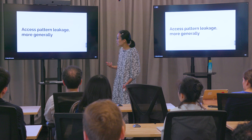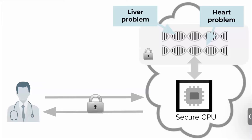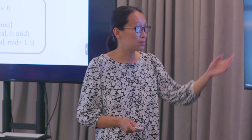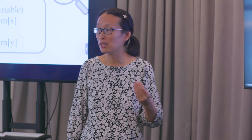Access pattern leakage is actually a more general problem. Here's a medical example: if you're storing genomic data in the cloud — say 23andMe — and a doctor is accessing certain snippets in the genomic data, if you see the doctor is accessing snippets related to liver problems, you know the patient may be screened for liver problems. This is sensitive medical information. And everyone's familiar with binary search — if you have a database and do binary search, you look at the middle element and recurse left or right. By observing the sequence of accesses, you can learn exactly what key is being searched, leaking everything about the query.